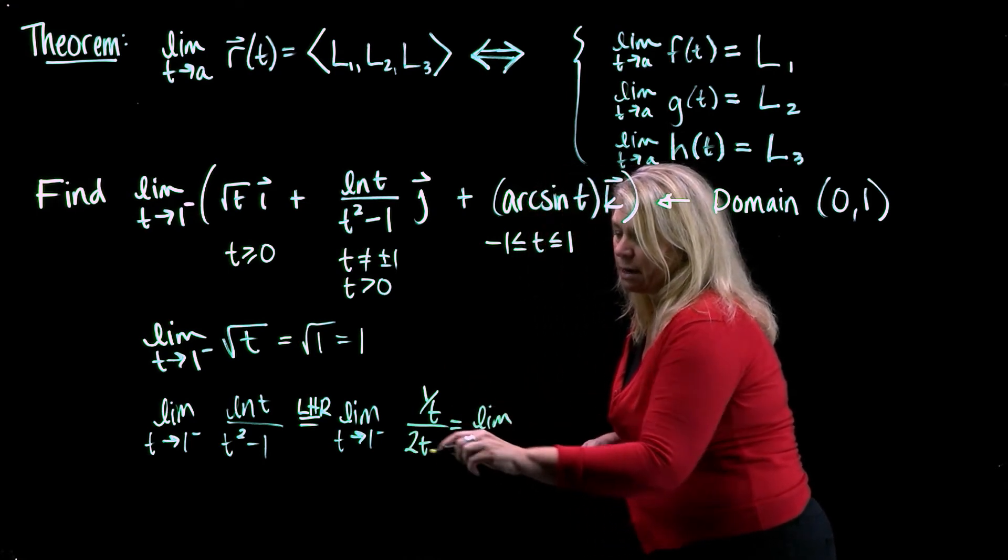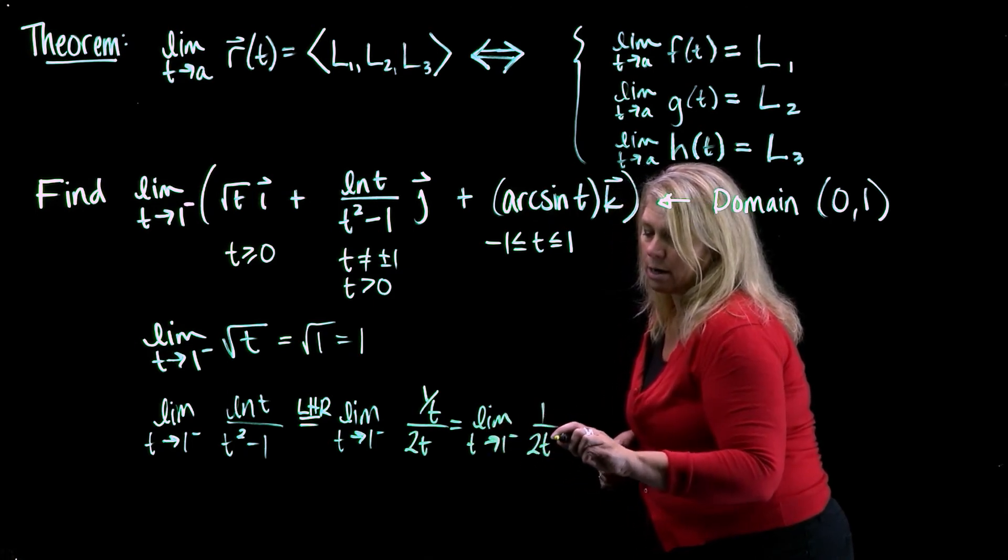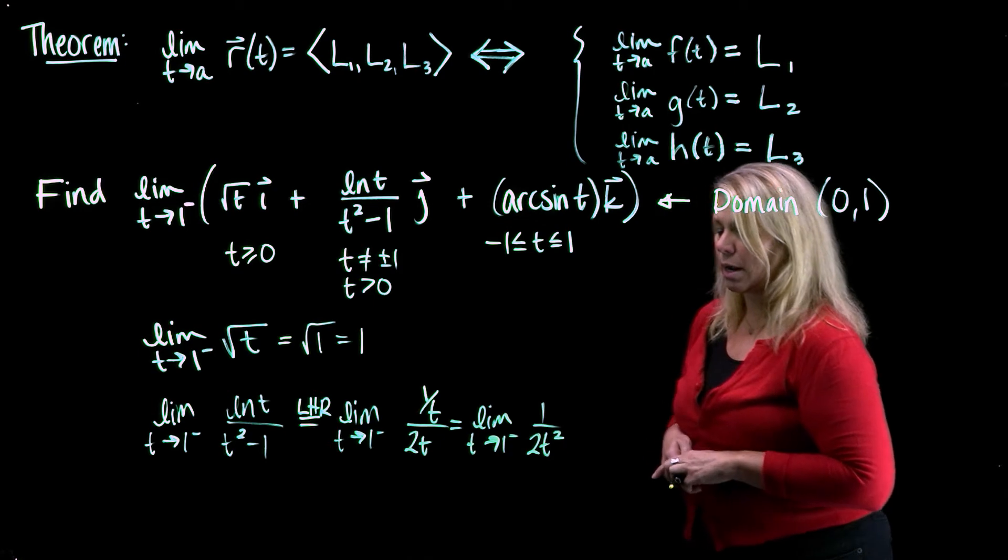1 over t divided by 2t is 1 over 2t squared. Just simplifying that with the algebra here.